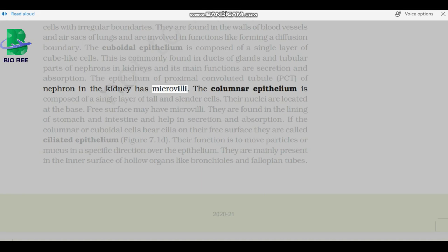The columnar epithelium is composed of a single layer of tall and slender cells. Their nuclei are located at the base. Free surface may have microvilli. They are found in the lining of stomach and intestine and help in secretion and absorption. If the columnar or cuboidal cells bear cilia on their free surface, they are called ciliated epithelium. Their function is to move particles or mucus in a specific direction over the epithelium.